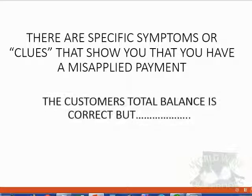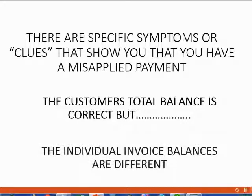The clues are: the customer's total balance is correct, but the individual invoice balances one by one are different. If this is the condition, then you know for sure the only possible mistake that you can have is a misapplied payment.